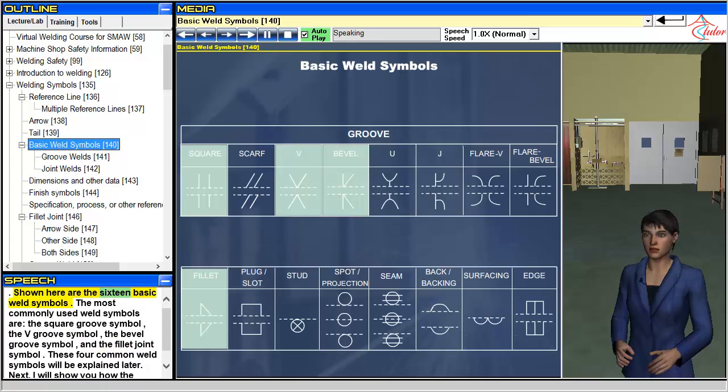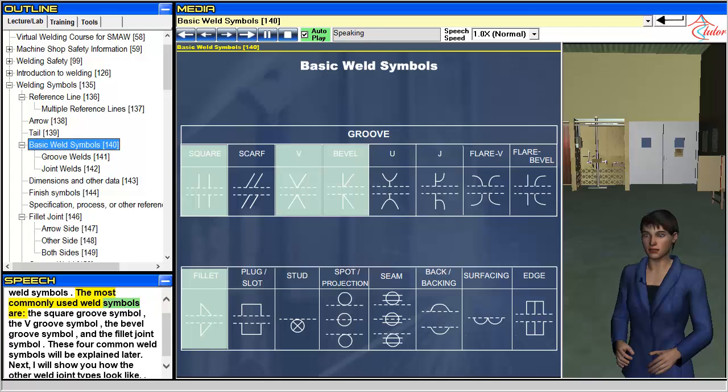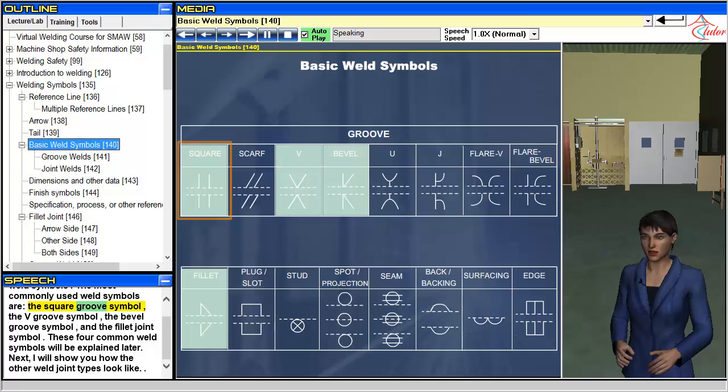Shown here are the 16 basic weld symbols. The most commonly used weld symbols are the square groove symbol, the V-groove symbol, the bevel groove symbol, and the fillet joint symbol. These four common weld symbols will be explained later.